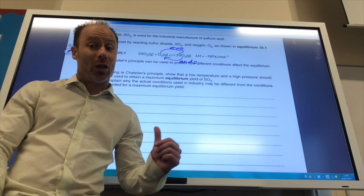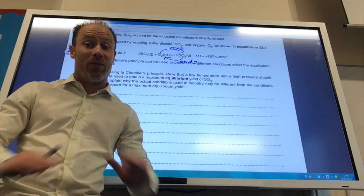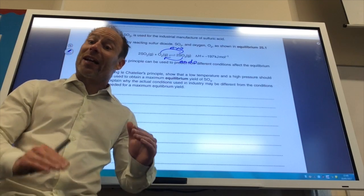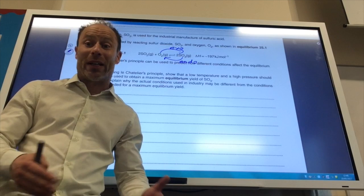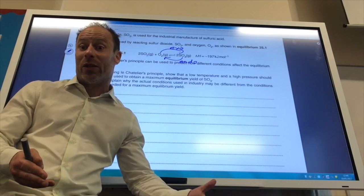So a low temperature, good equilibrium yield, but very, very slow rate. So I have to find a compromise between the two. It's no point having to wait 200 years to reach that equilibrium position.